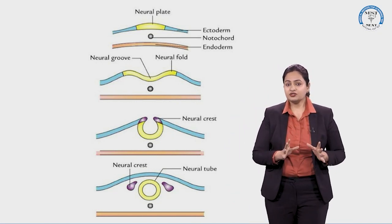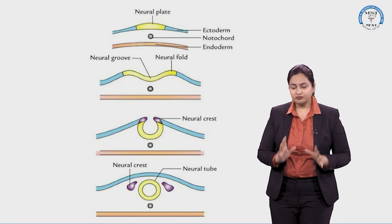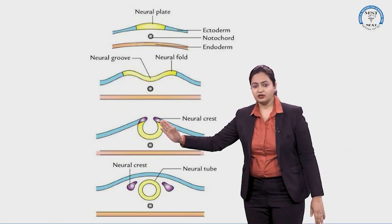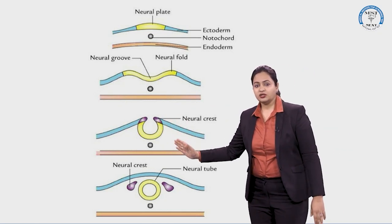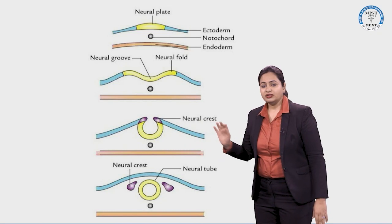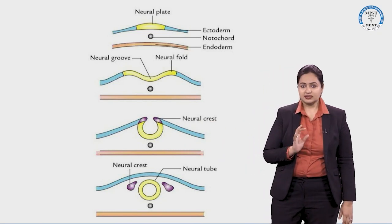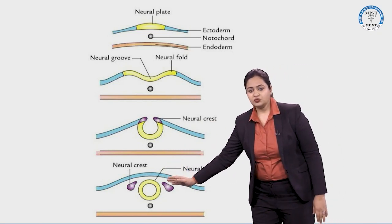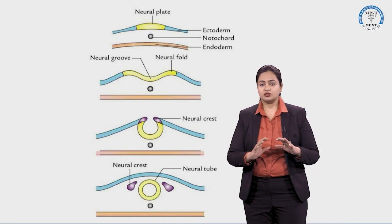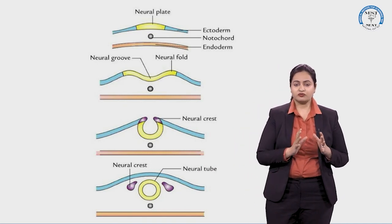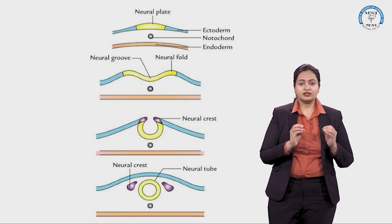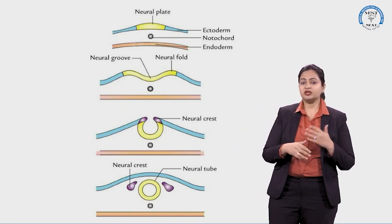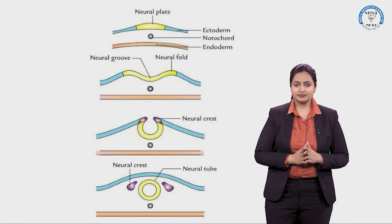When the neural tube is being formed, there are cells present on the dorsal and lateral aspects of the neural tube called neural crest cells. These are specialized cells that will give rise to various other structures.